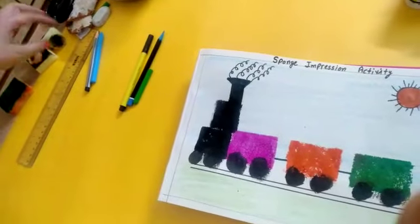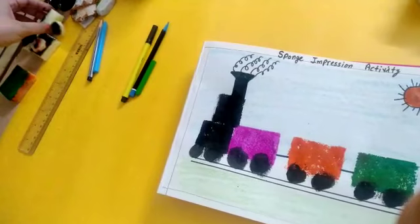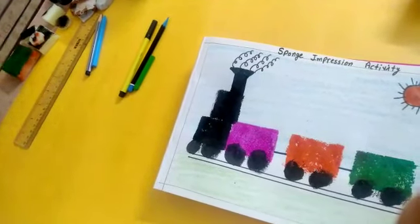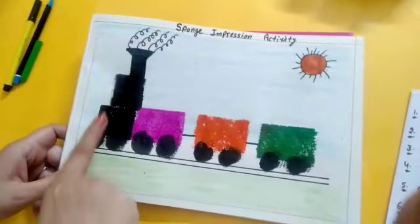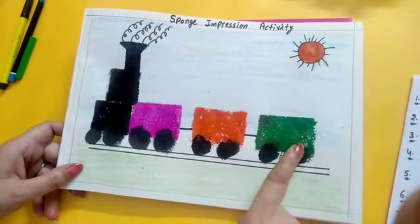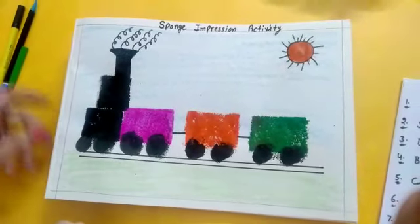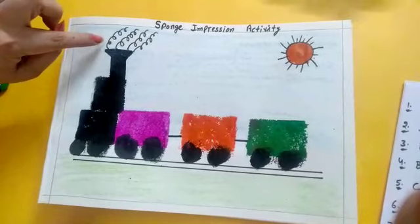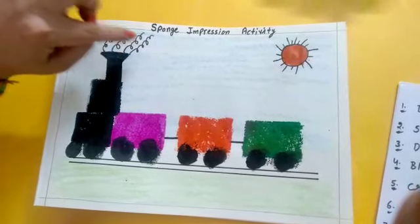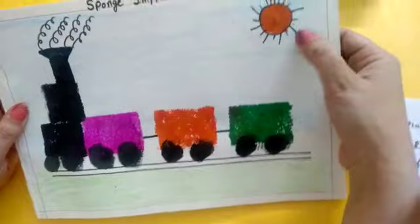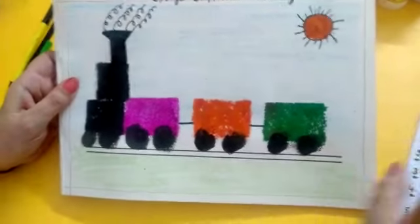Some sponge in different shapes—circle shape, rectangle shape, and square shape. Make impressions with sponge with different colors. Now for the smoke impression, use black sketch, and circle shape for sun and tires. Okay, students.